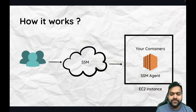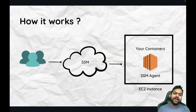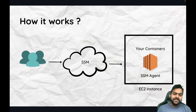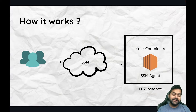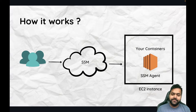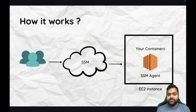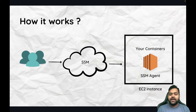How does it work? It's fairly straightforward. As a user, you either access the SSM console or via the AWS CLI, which we will see in the demo. It goes through all the SSM magic and accesses your EC2 instance. In the diagram, you can see there is an SSM agent running on the EC2 instance — that agent needs to be running on your instance.